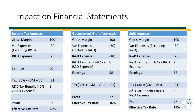Now let's look at the different accounting approaches and their impact on financial statements. The income tax approach, the government grant approach, and the split approach are all handled similarly except for their different effect on the effective tax rate. The real difference is whether they take the tax credit before or after taxing overall earnings. In case one, the tax benefit is taken after taxing overall earnings. In example two, the tax credit is taken before taxing earnings. In example three, it's split up. This matters because of tax brackets and different effective tax rates.